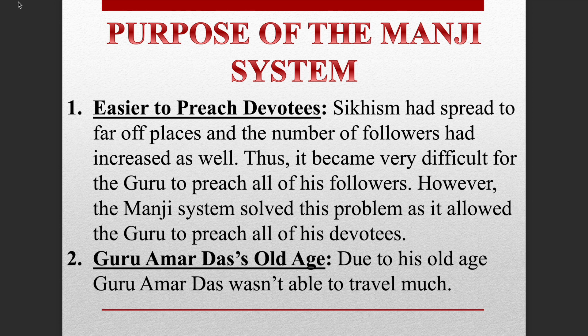As I told you, Guru Amar Das Ji found it difficult to go everywhere. Because he stayed in Goindwala, he could not visit everyone. So he took a solution and introduced the Manji system, in which the whole area was divided into manjis. A deserving representative of the Guru was appointed to each area.